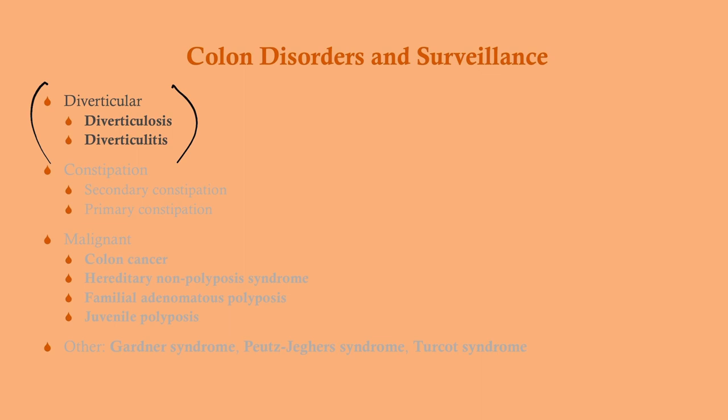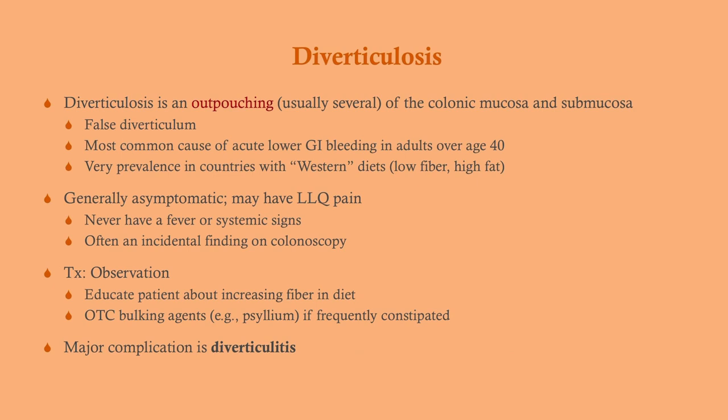We're talking about diverticular disease. Diverticulosis is an outpouching of the colonic mucosa and submucosa, making it a false diverticulum — along the same lines as a Zenker's diverticulum, but not a Meckel's diverticulum, which is actually a true diverticulum. When diverticulosis does bleed, usually in the context of diverticulitis, it is the most common cause of acute lower GI bleed in adults over the age of 40.